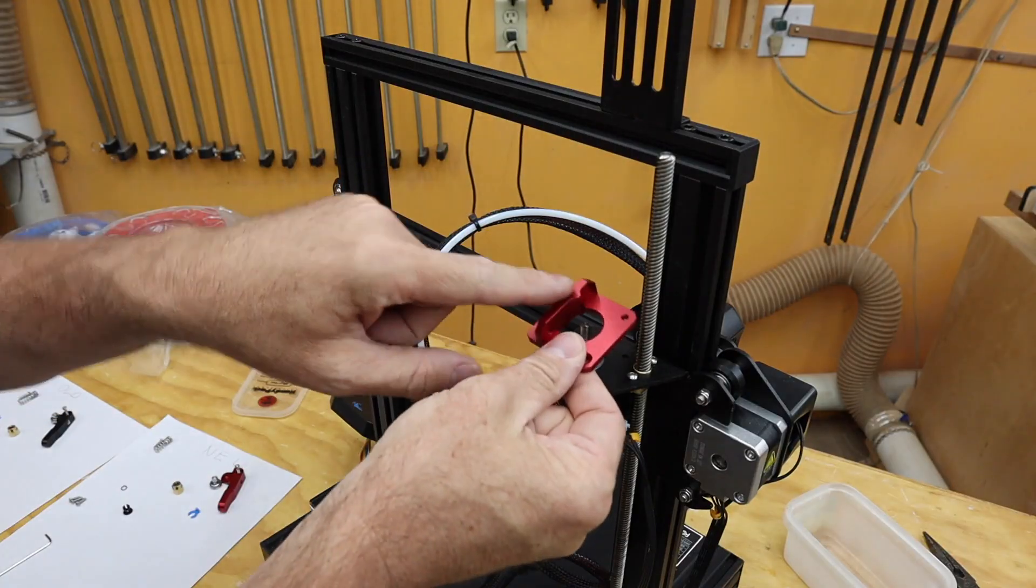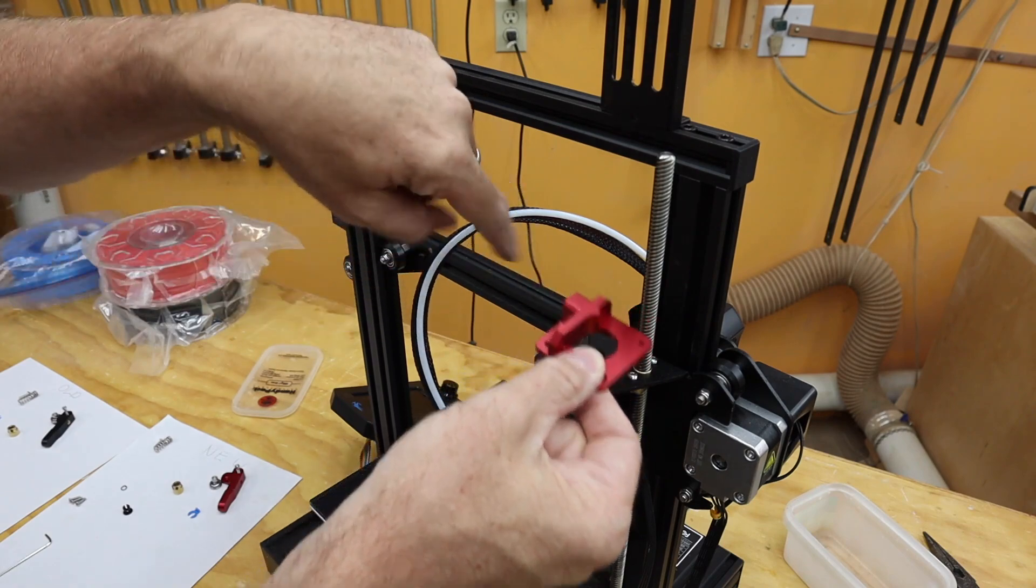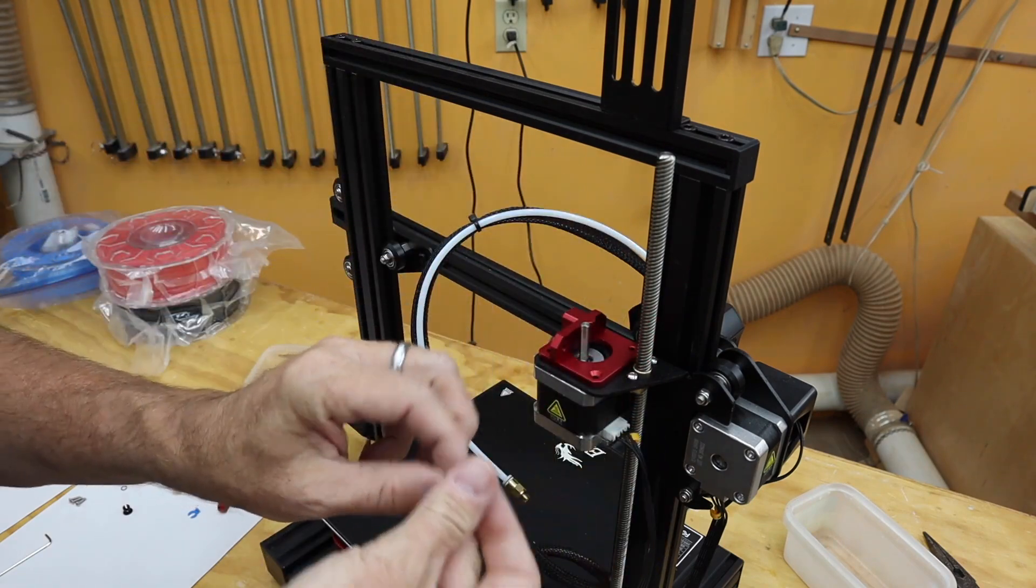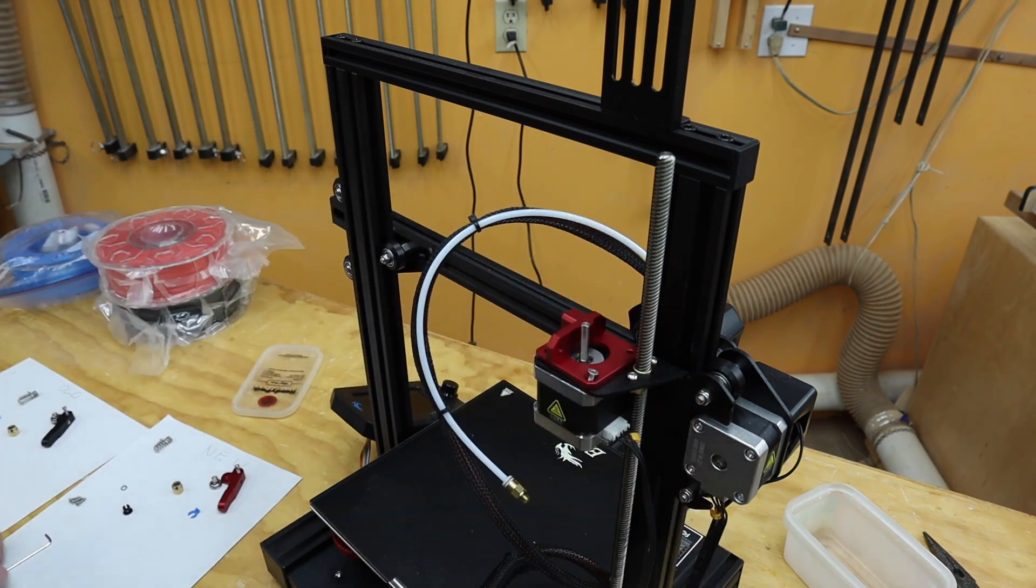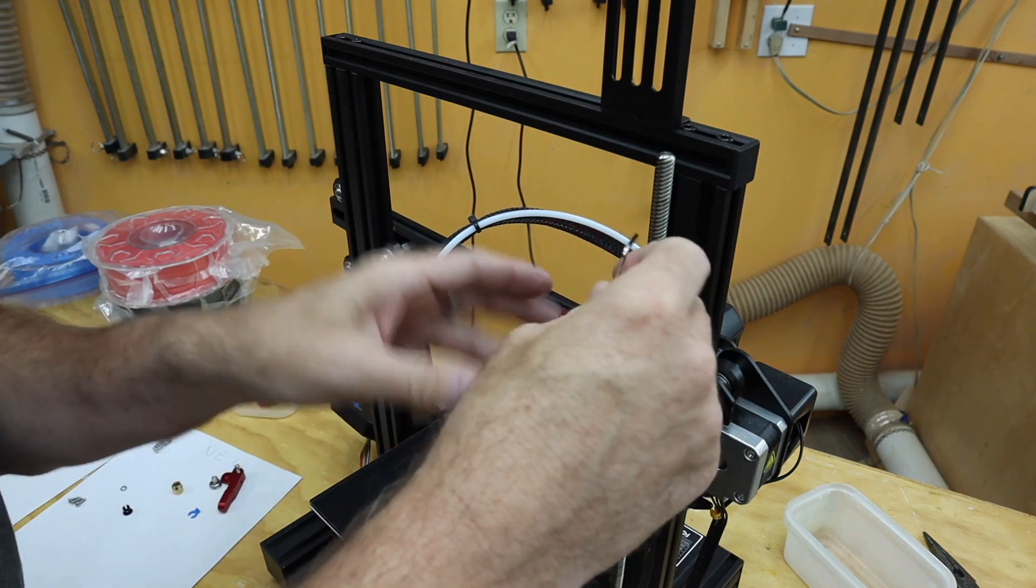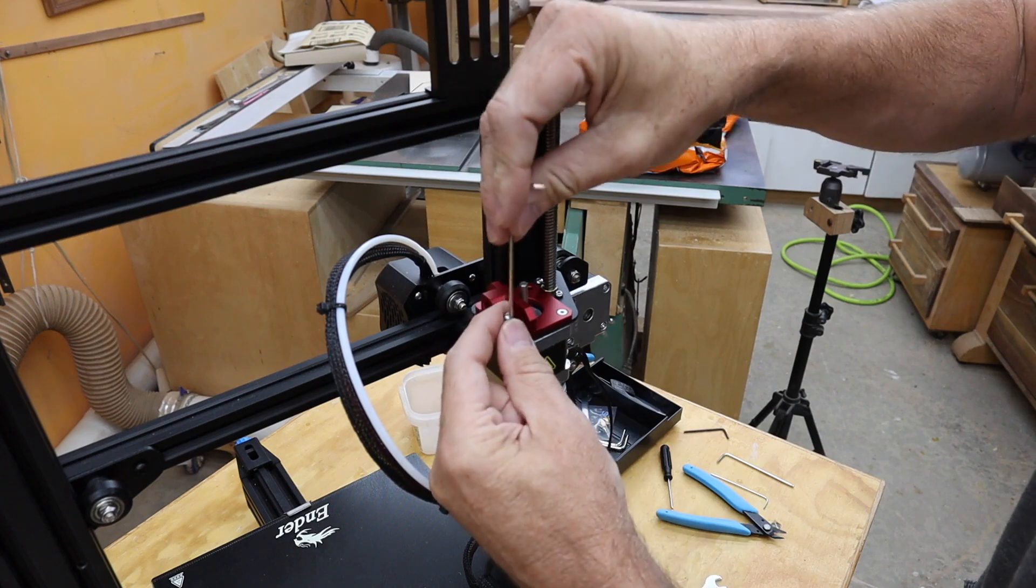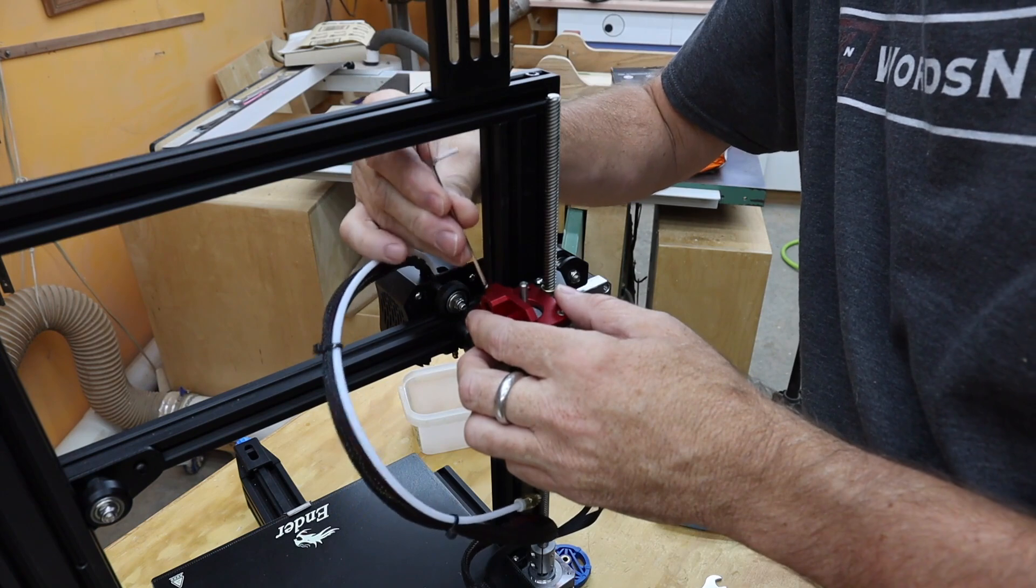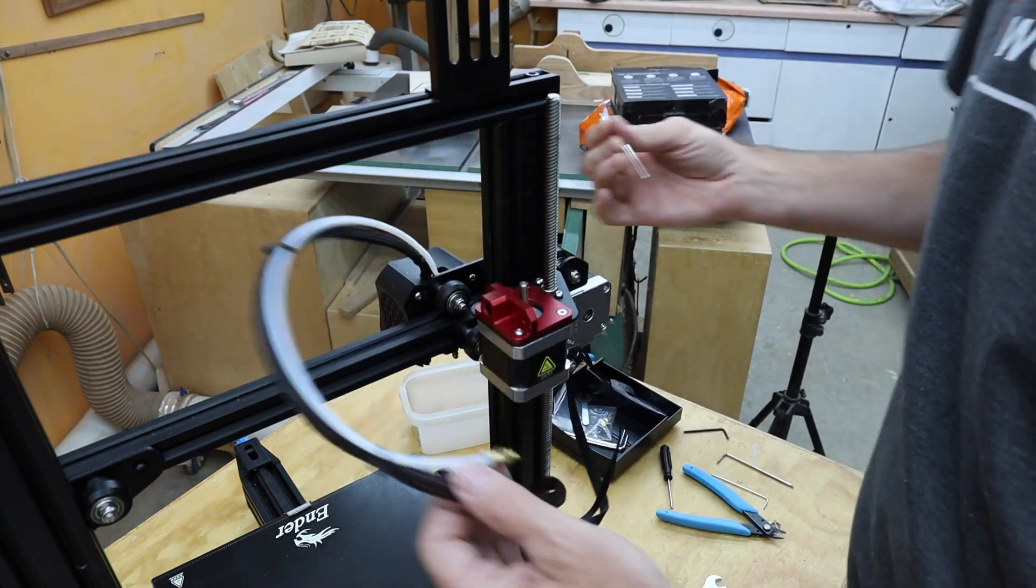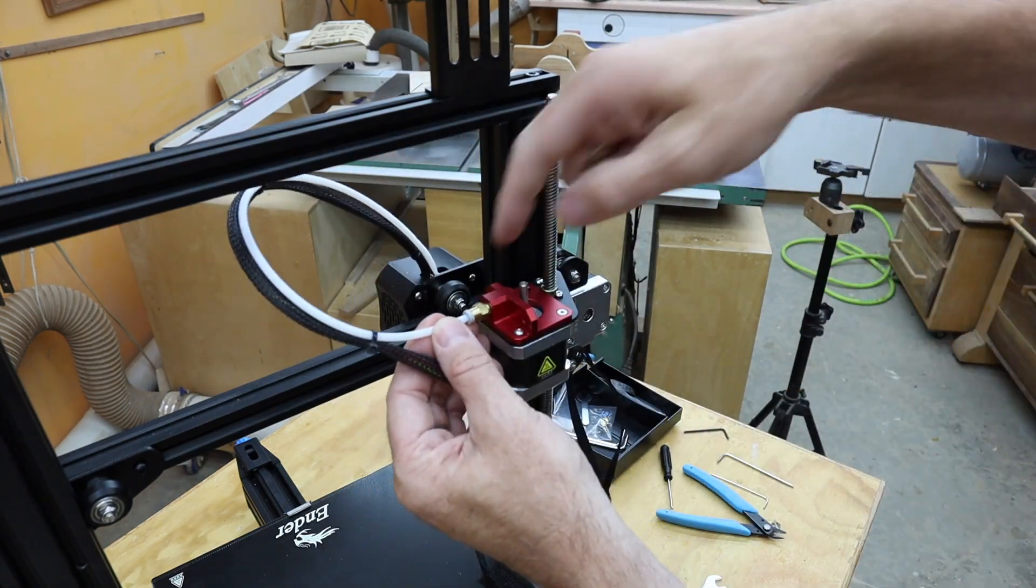And we're going to start with the countersunk screw. Put the aluminum piece in place. Make sure the feed is going this way. And we'll drop this in. Lightly put the first one in place. And the screws on the other side. I'll come by later and tighten them all up. Let's put this back in.